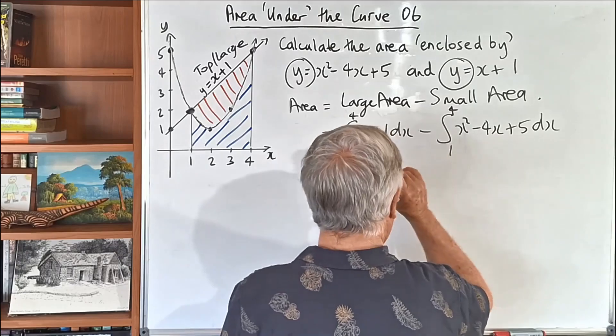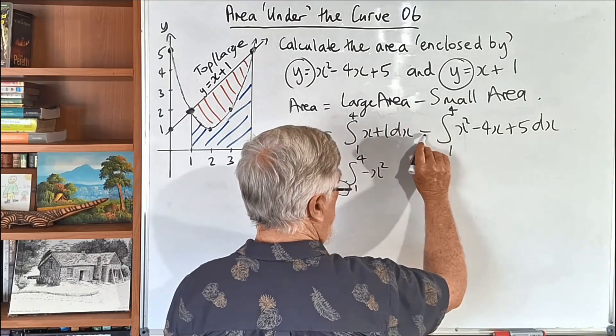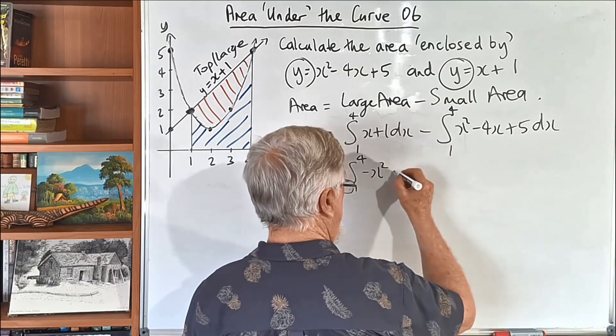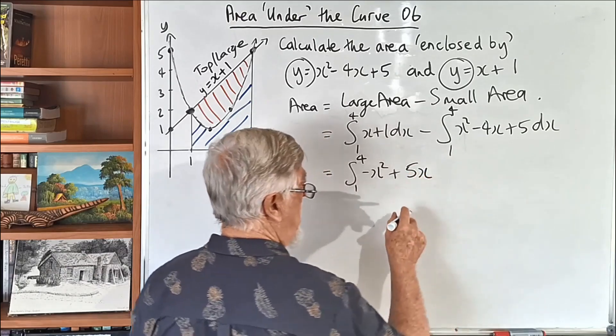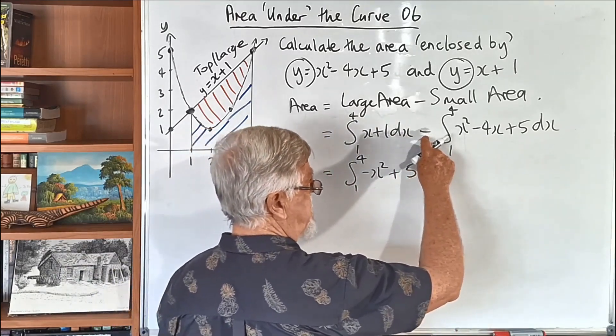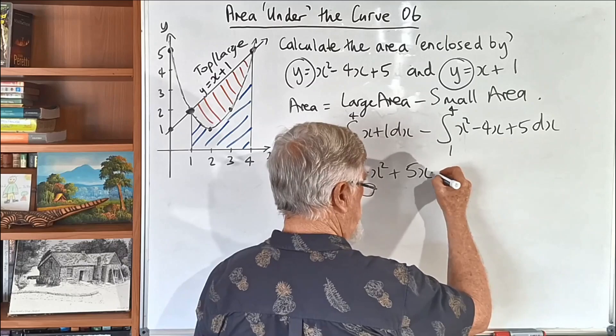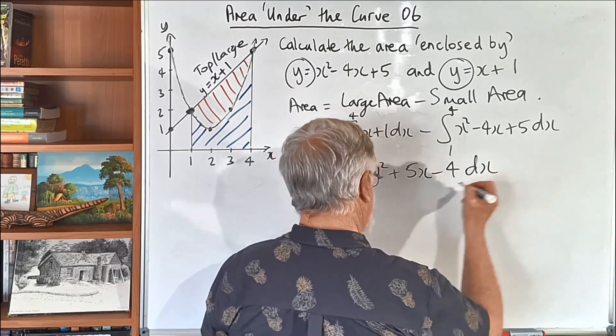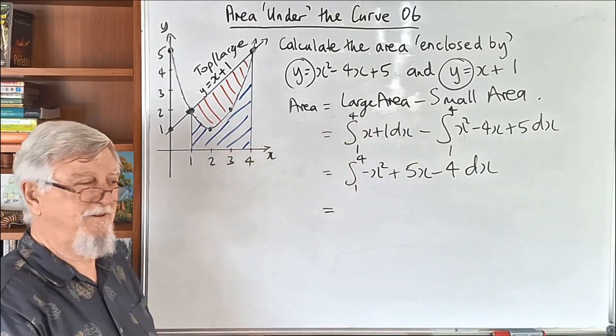So, then I've got, what have I got? x minus minus 4x, so that's plus 5x, and then I've got 1 minus 5, so that's minus 4, and let's see if that gets the same answer. Let's have a look what happens.